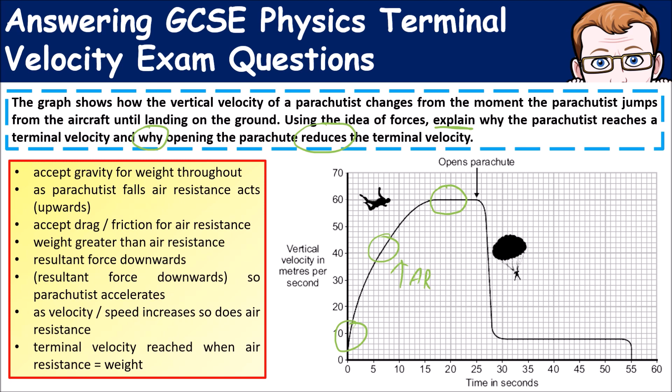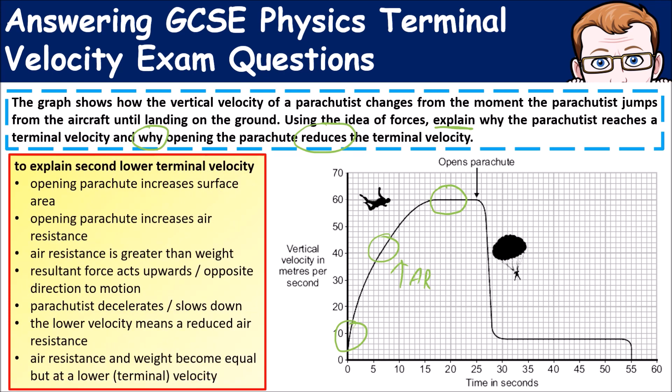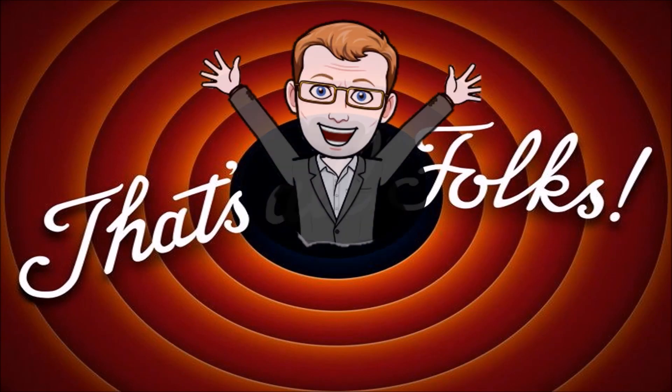The second part is talking about when the parachute is opened. We can see that it increases the surface area, therefore the resultant force acts upwards or in the opposite direction. That will decelerate its speed until it becomes equal again and it reaches that second period of terminal velocity. However, it's a lot lower than before the parachute opened.